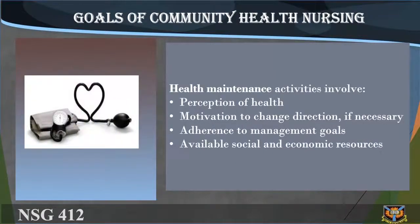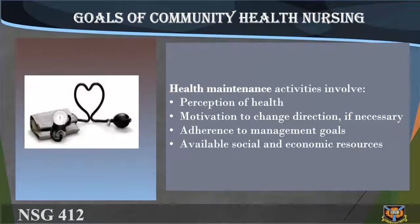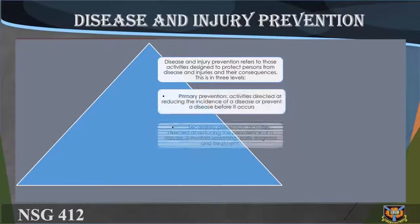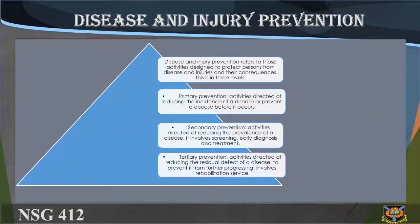Health maintenance activities involve: (1) perception of health, (2) motivation to change direction if necessary, (3) adherence to management goals, and (4) available social and economic resources. Disease and injury prevention refers to activities designed to protect persons from disease and injuries and their consequences. This is organized in three levels: primary, secondary, and tertiary prevention.